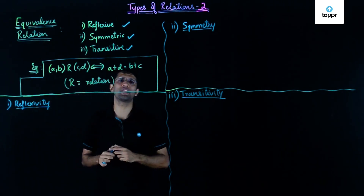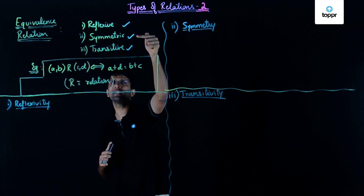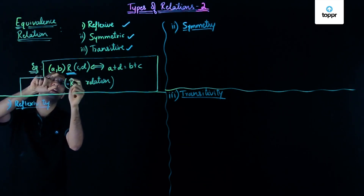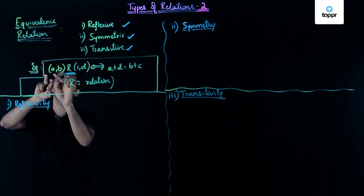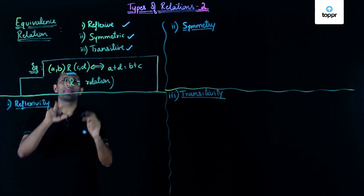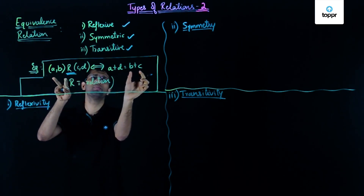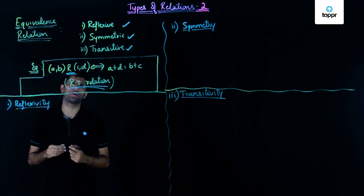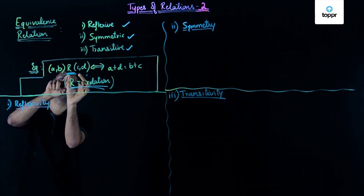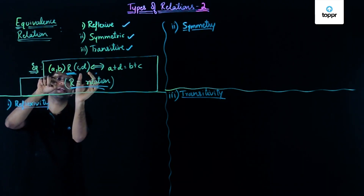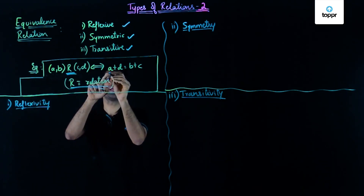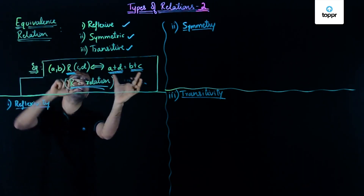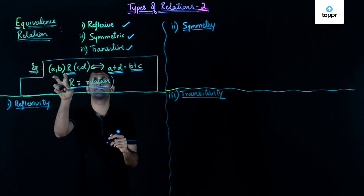Whenever you are given a relation, we can check for the equivalence relation by checking if these three properties are satisfied or not. Let us take an example. Suppose we have a relation R defined such that an ordered pair (a, b) is related to an ordered pair (c, d) according to the property that a plus d equals b plus c. We have to check if this is an equivalence relation or not.